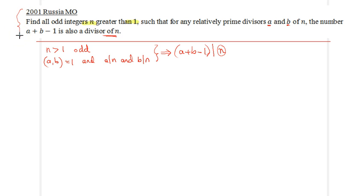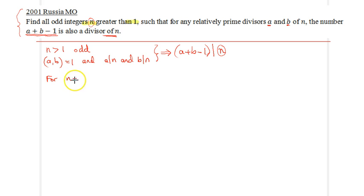Let's try to first figure out what a typical solution would look like. For what values of n will this very strange, very unlikely condition hold? It turns out, after some brainstorming, that this will hold for all prime powers. So therefore, for n equal to p to the a-th power, the condition defined in the problem is satisfied.